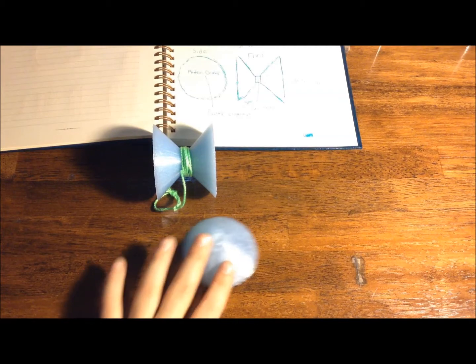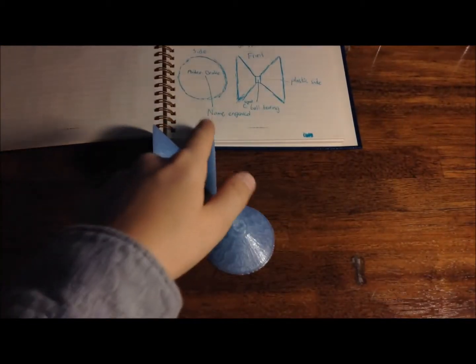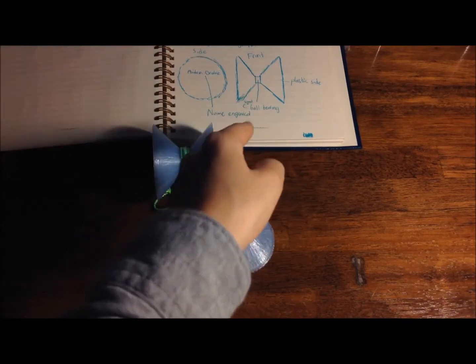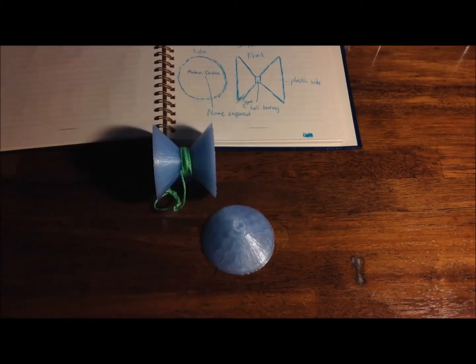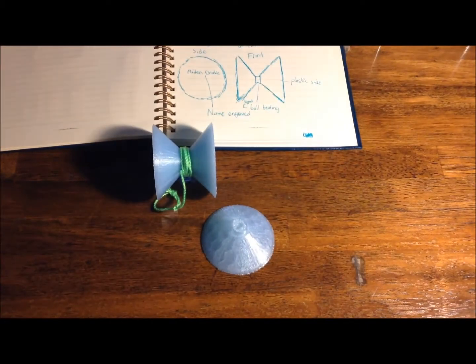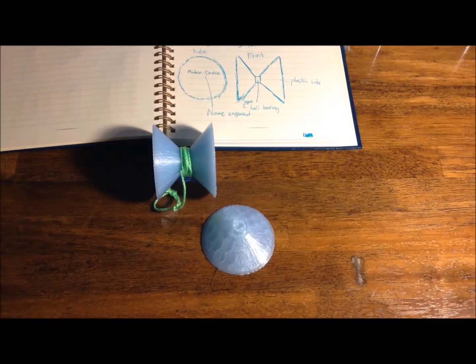Yeah, I based it off of this diagram, except I didn't put, it's a C-sized bearing right there, but I didn't actually put a bearing in this. It's just a cool normal yo-yo. I might redesign another one, which I'll show you guys if I do, to actually have a bearing in it.